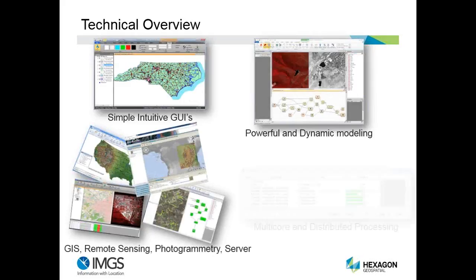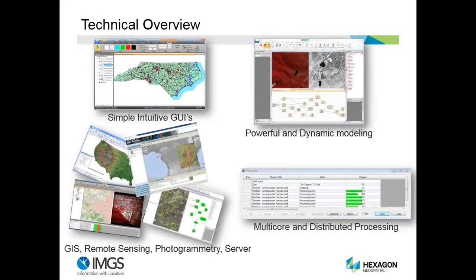Imagine provides some very simple, intuitive GUIs, the ability to do powerful and dynamic modeling — and that's really what we're going to focus on this morning. Glenn is going to show a very efficient workflow to do dynamic modeling and create analysis. It also provides GIS, remote sensing, photogrammetry, and a server product, as well as the ability to do multi-core and distributed processing. If you are doing these spatial models on very large data sets, the ability to spread the load over 64-bit architectures on multi-core machines and distributed systems is very necessary and is fully supported.